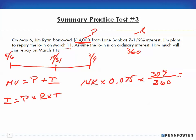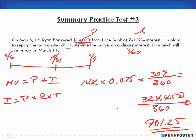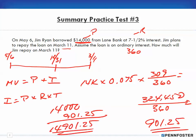We put 309 in the numerator and then do the math. We have 14,000 times 0.075 times 309, that gives us 324,450 in the numerator and 360 in the denominator. When we divide that by 360 we end up with $901.25 for the interest. So if we have $901.25 for interest and our principal is $14,000, we add our interest, that's $14,901.25. That's our maturity value, how much Jim has to repay on March 11th.